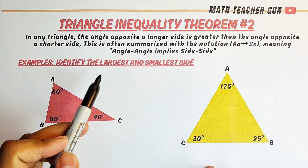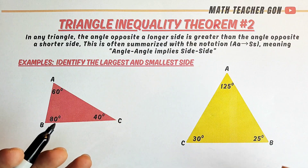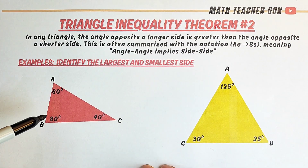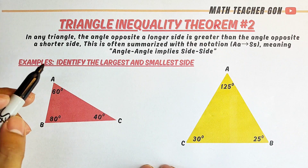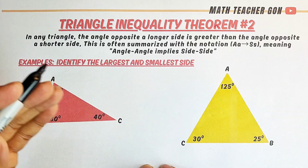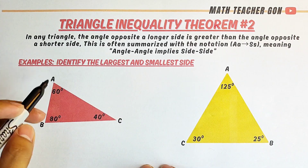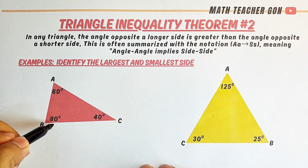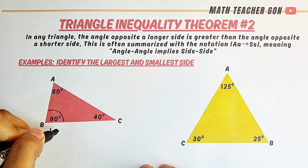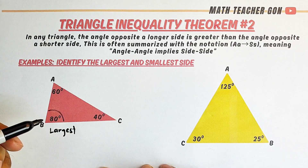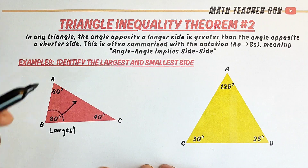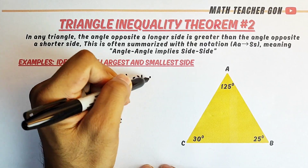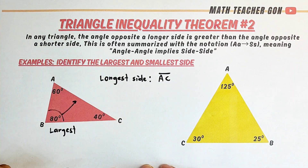Now let's identify the longest and shortest sides given angles of 80 degrees, 60 degrees, and 40 degrees. Which among the three angles is the largest? The largest angle is angle B at 80 degrees. Since this is the largest, the side opposite to it — side AC — is the longest side.